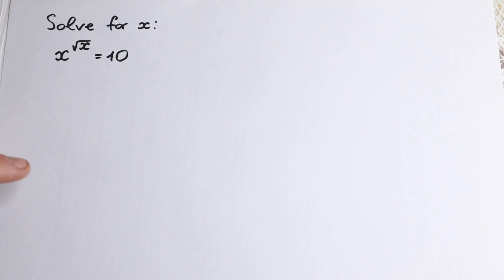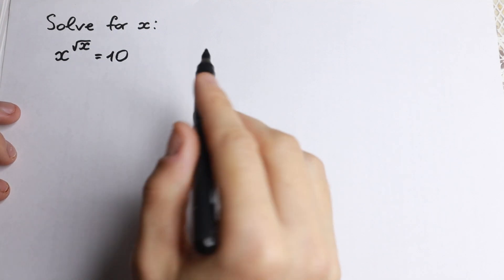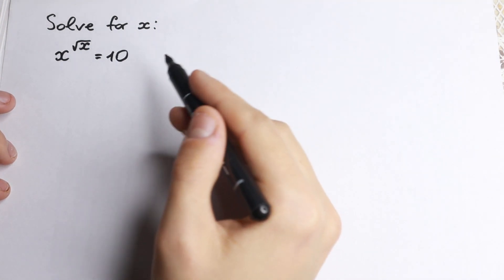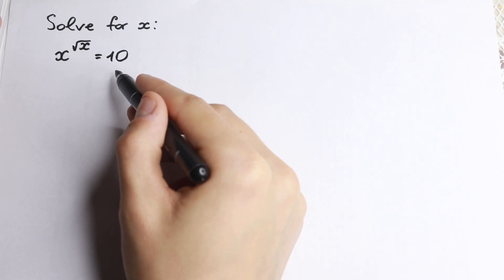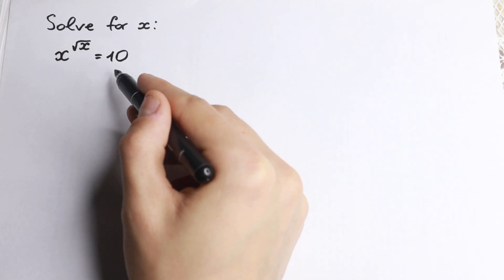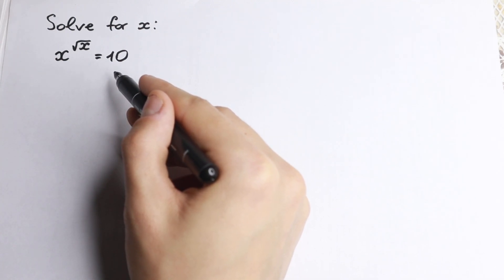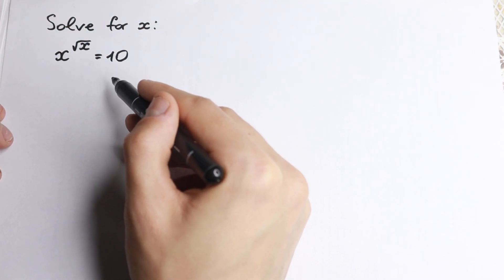Hello everyone, happy to see you here. We have a really interesting problem today — an exponential equation in a tricky form. We have x to the power squared of x equal to 10. On the first side we can easily try to solve it by inspection, but we have x to the power squared of x. It's not like x squared equal to 10, so we cannot find this number directly. We have x in our exponent and x as our base.